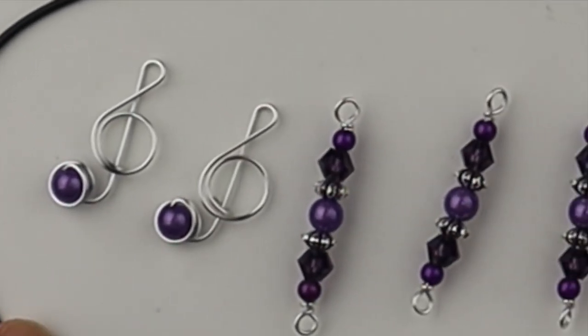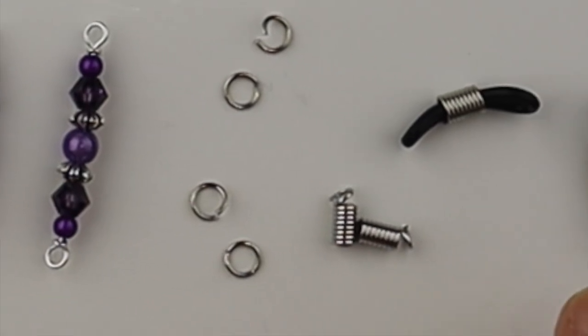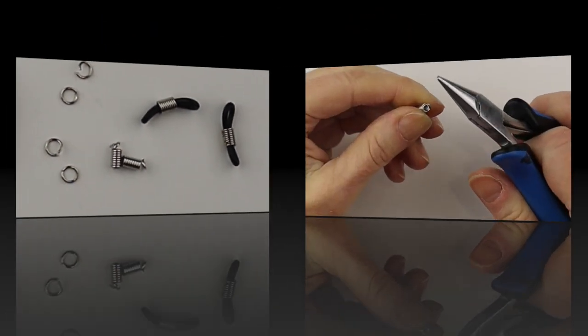That'll be one of our connectors. So we have the treble clefs, the beaded connectors, some jump rings, the springs, and the eyeglass findings.